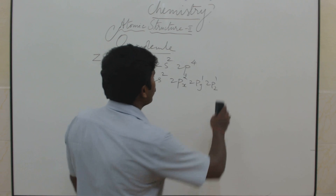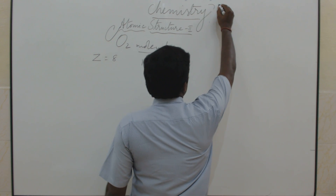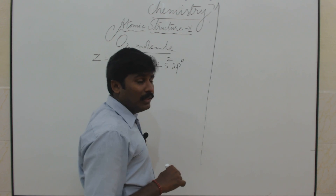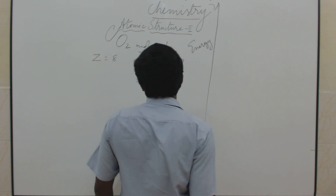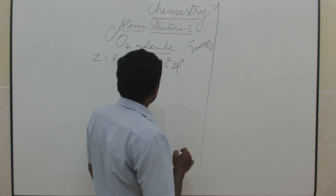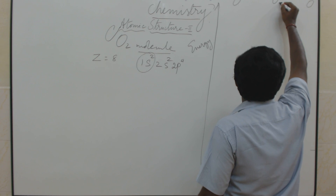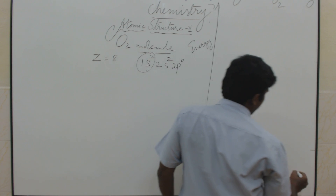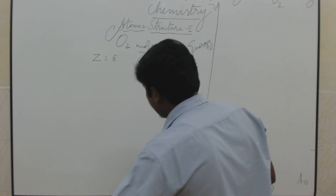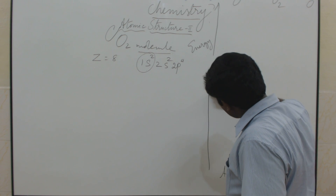Now we are going to draw the MO diagram. According to MO theory, we draw the energy level diagram with increasing energy levels according to the Aufbau principle. Instead of 1s, we use KK notation. For sigma 1s2 and sigma star 1s2, we start from 2s. This shows one oxygen atom, another oxygen atom, and the oxygen molecule, with atomic orbitals on each side and molecular orbitals in the middle.